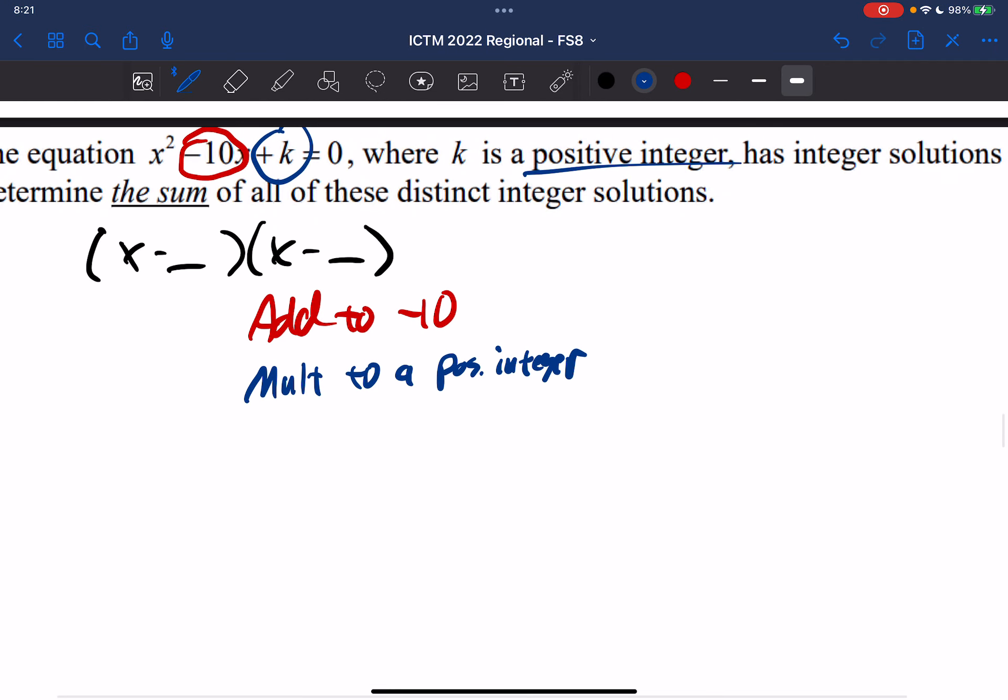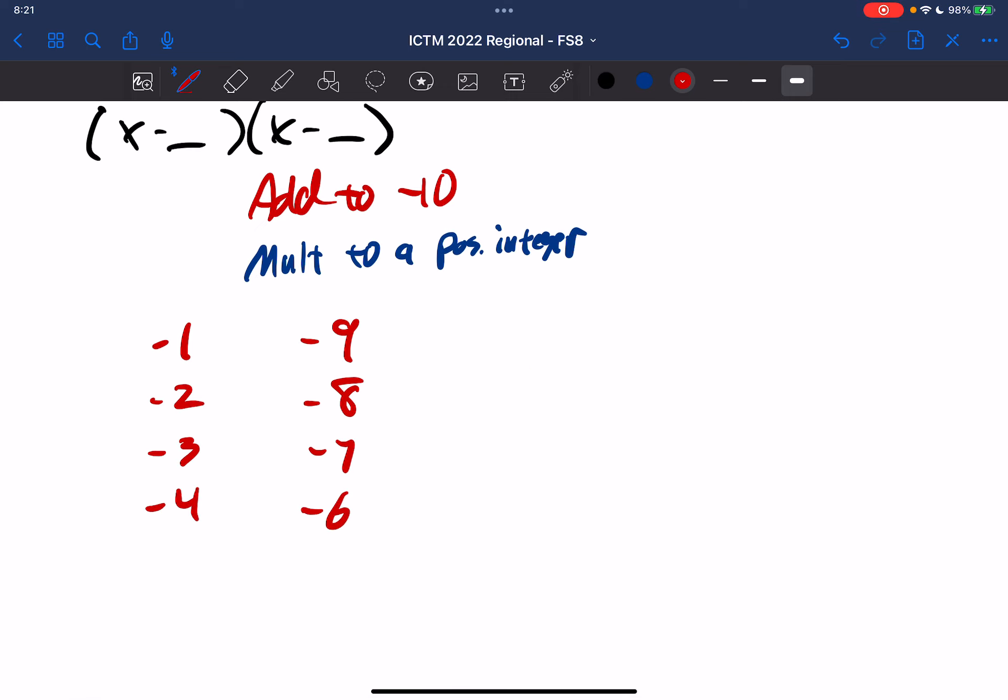So let's think of the possibilities. Well, we could have negative 1 and negative 9, we could have negative 2 and negative 8, negative 3 and negative 7, negative 4 and negative 6, negative 5 and negative 5.